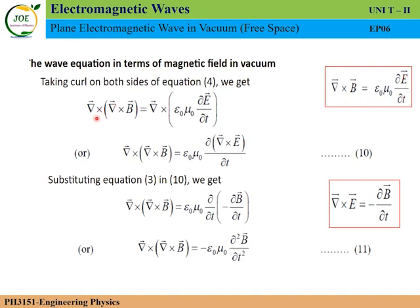Taking del cross of del cross B equals del cross of epsilon-zero mu-zero dou E by dou t, then moving del inside the bracket: del cross del cross B equals epsilon-zero mu-zero dou by dou t of del cross E. Substituting the third Maxwell equation, del cross E equals minus dou B by dou t.